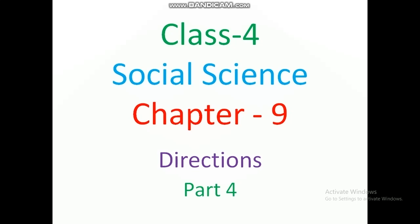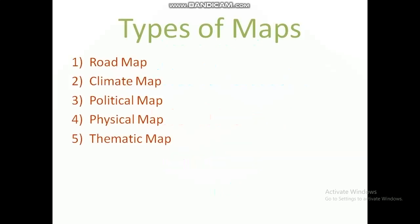After knowing maps, we will read the different types of maps. The types of maps are: roadmap, climate map, political map, physical map, and thematic map.